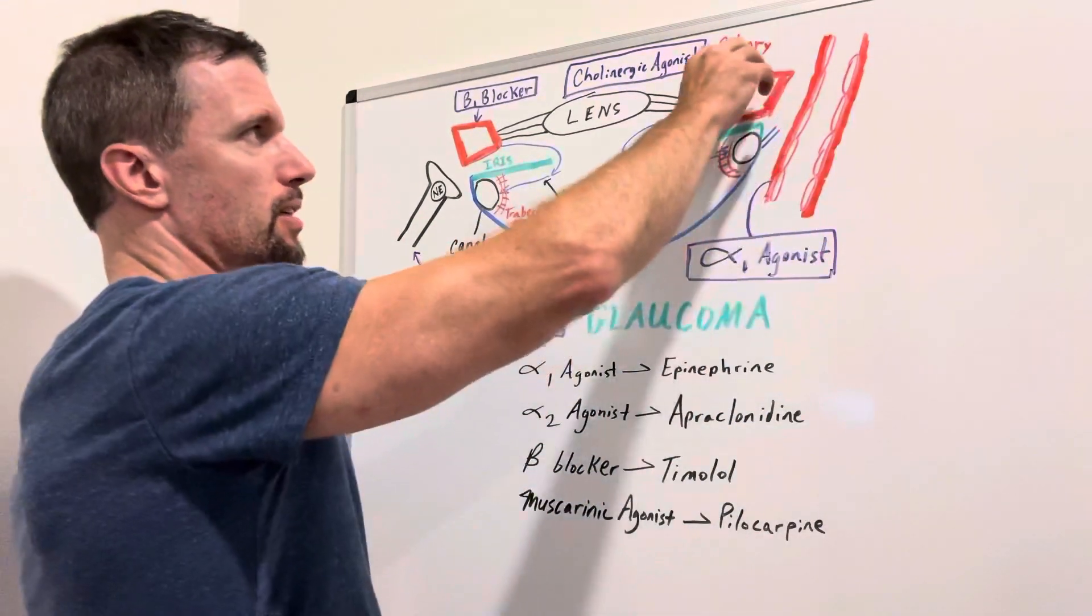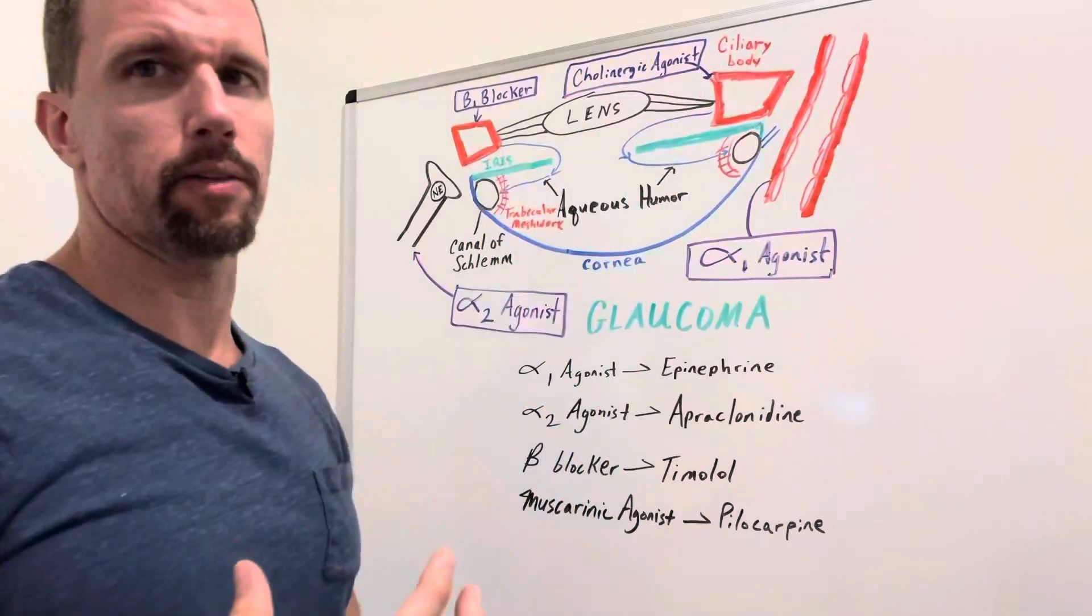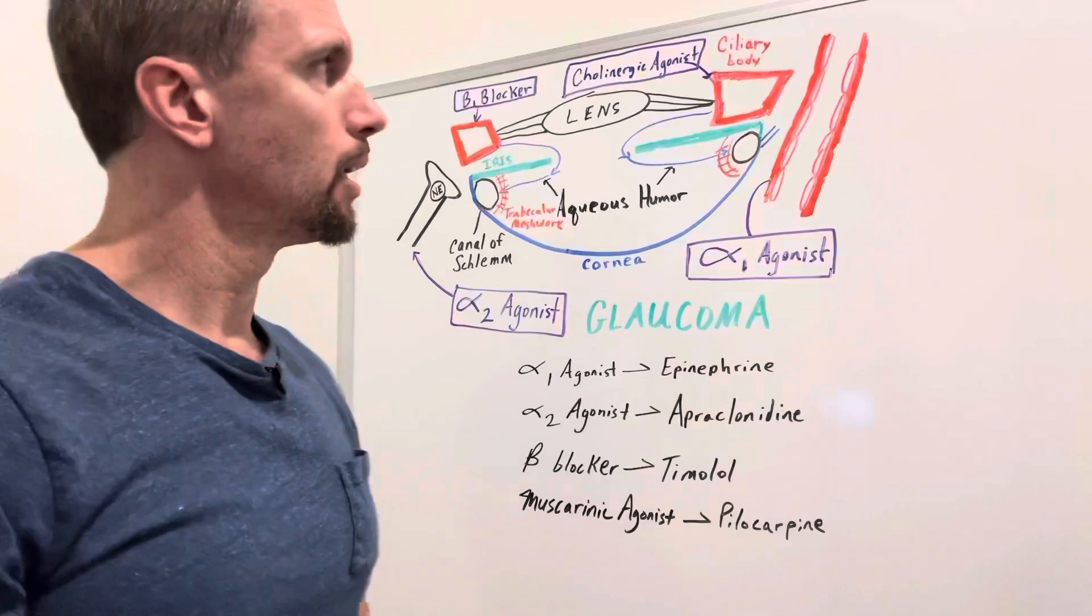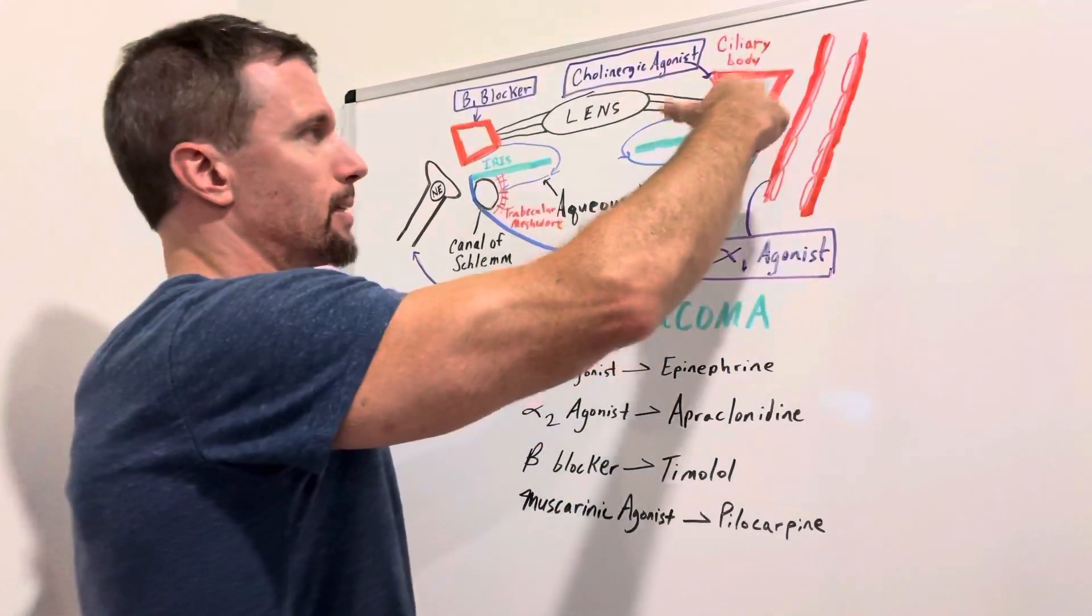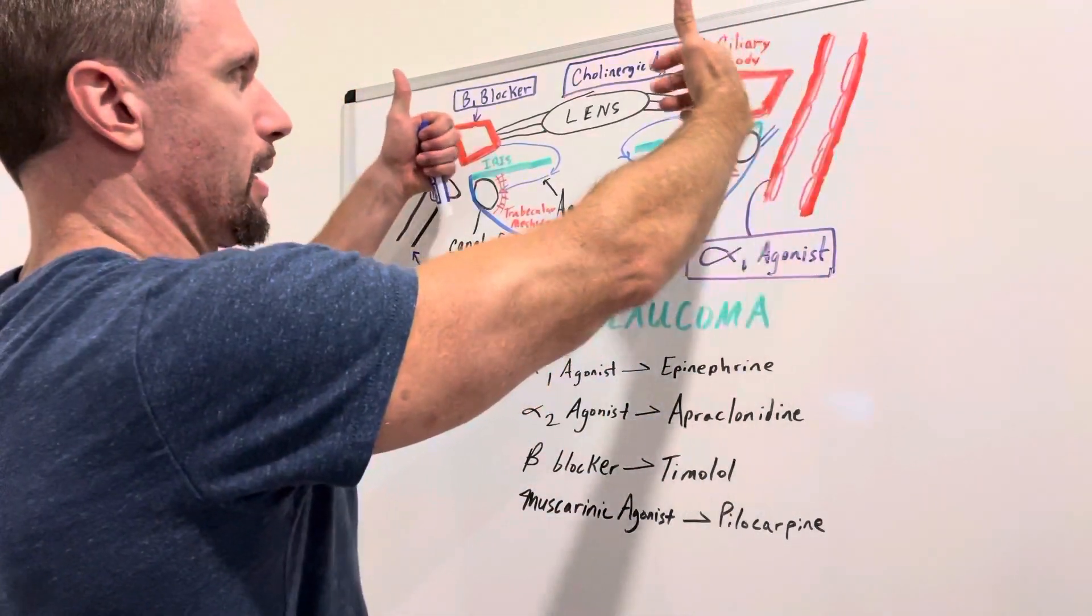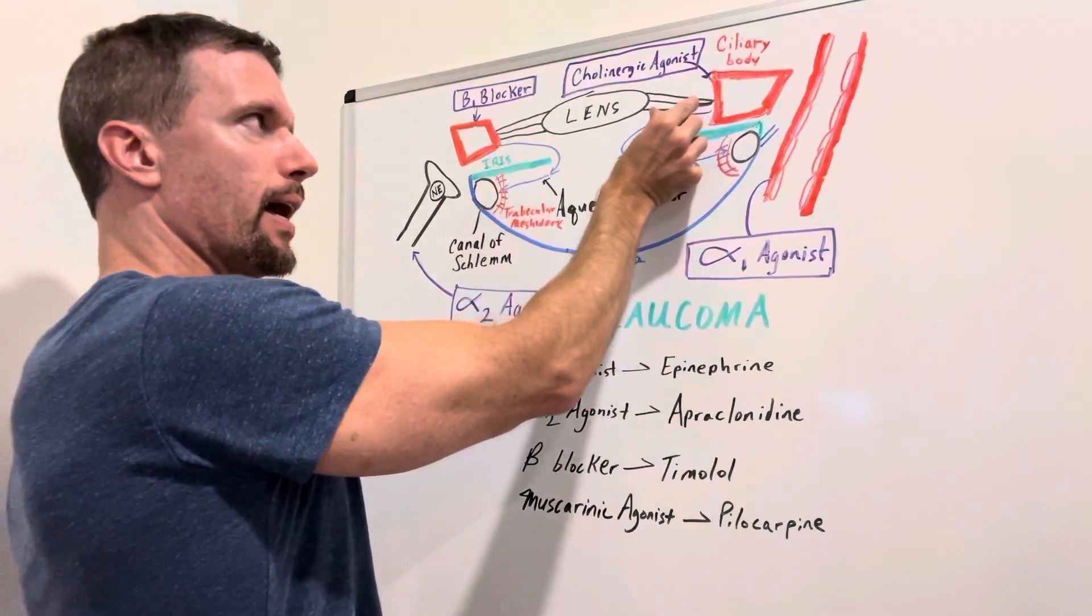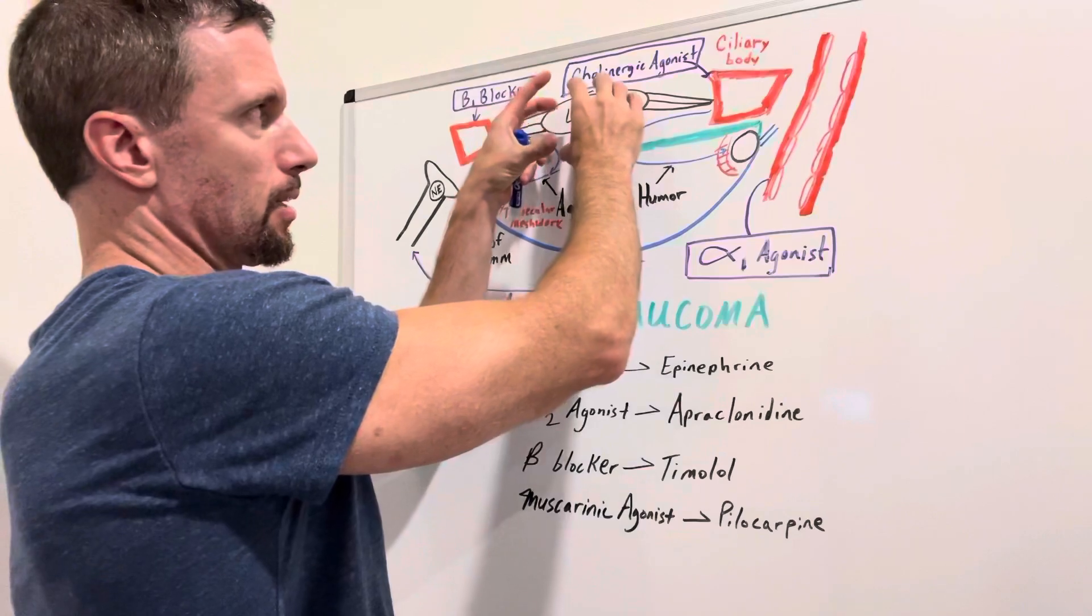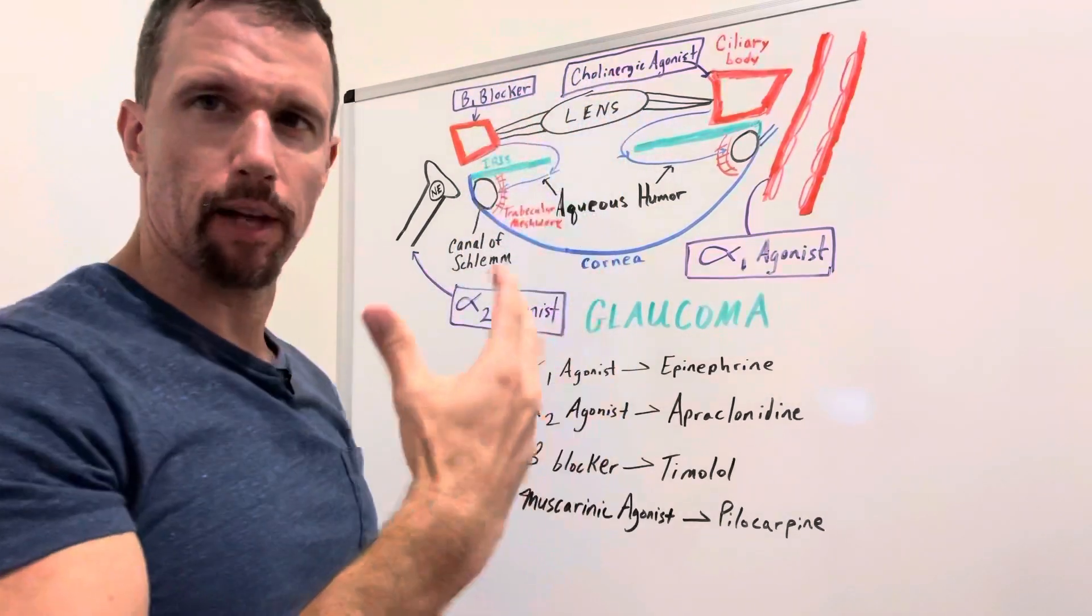And then you have the ciliary body. Within the ciliary body you have the smooth muscle called the ciliary muscle. And when it contracts it brings the edges of the eye together and puts that suspensory ligament on slack. That will cause the lens to accommodate and round out for near vision.